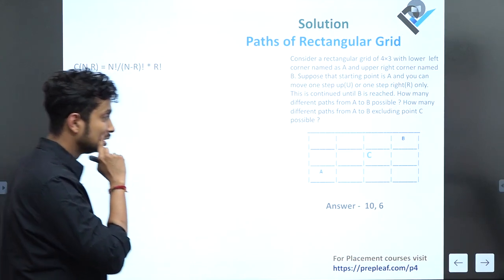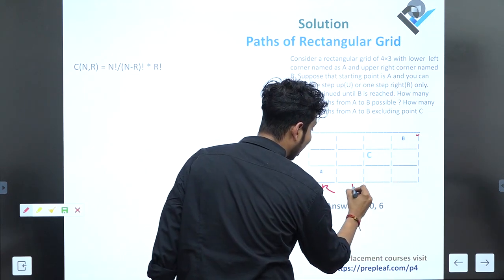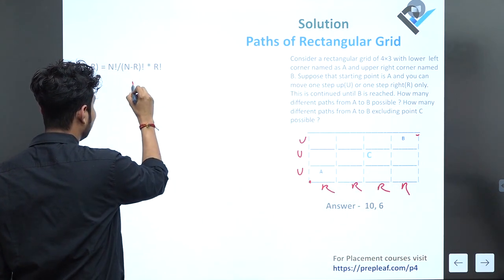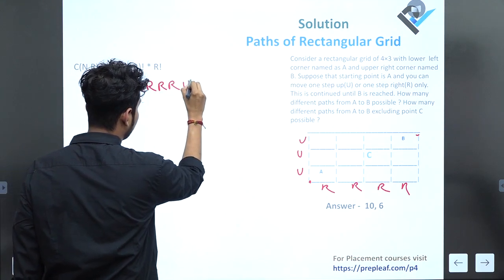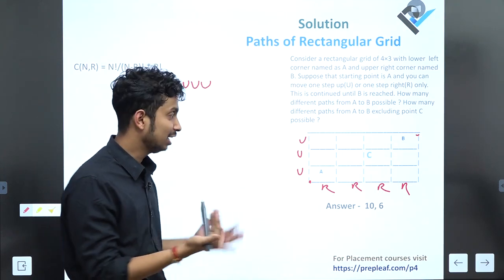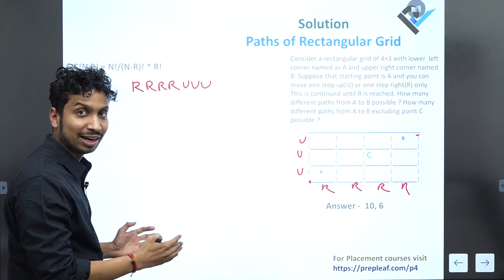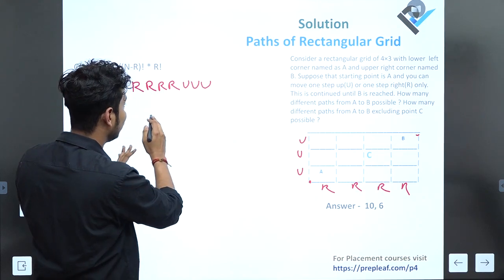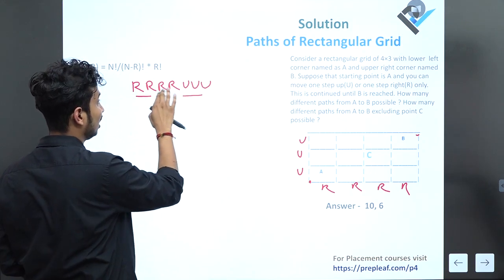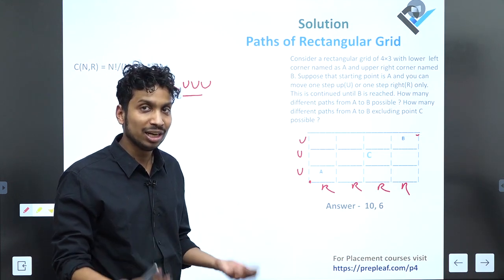In reaching point A to point B, total number of steps are R R R R U U U. A person has to make these seven steps in any combination. The problem becomes simple: to reach from A to B, we have to find the number of ways to arrange these seven numbers in any permutation. The problem is: in how many ways can you arrange R R R R U U U?